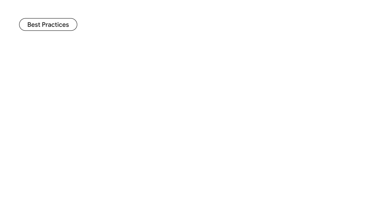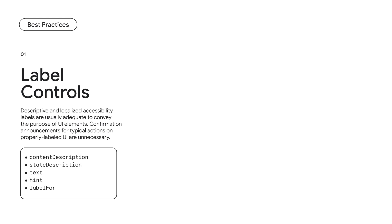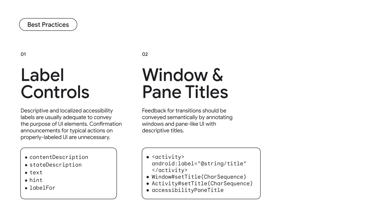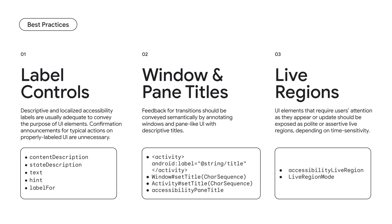We recommend app developers replace accessibility announcements with more semantic and less disruptive alternatives. These include providing descriptive labels that clearly communicate actions associated with UI elements, thereby eliminating the need for confirmation announcements for most user actions; using window and pane titles to convey a high-level description for activities and fragments, which are described by TalkBack automatically during transitions; and defining live regions on UI elements that appear temporarily or update their description if users should be made aware of related content changes. The announceForAccessibility API documentation has been updated to include more details and other semantic alternatives. We encourage feedback from developers via the accessibility component of Android's public issue tracker.